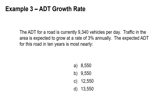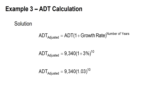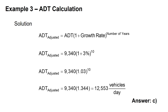Example: We have an ADT of 9,340 vehicles per day, traffic is expected to grow at 3% annually, and we're asked for the expected ADT in 10 years. Adjusted ADT = 9,340 × (1 + 0.03)^10 = 9,340 × 1.03^10 = 9,340 × 1.344 = 12,553 vehicles per day. That is answer C.